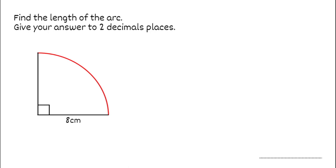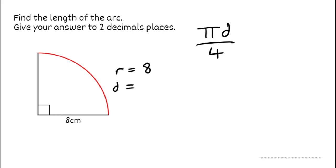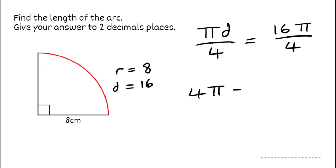For this next question, finding the arc length to two decimal places, we've got a quarter of a circle again. Our formula is the whole circumference — pi times the diameter — divided by 4. We're given the radius of 8 centimetres, so to find the diameter we double it: the diameter is 16. So we do pi times 16, which is 16 pi, divided by 4, giving us 4 pi. Converting to a decimal, we get 12.5663.